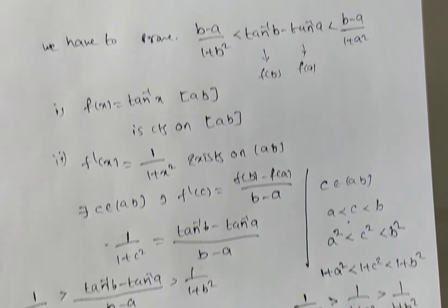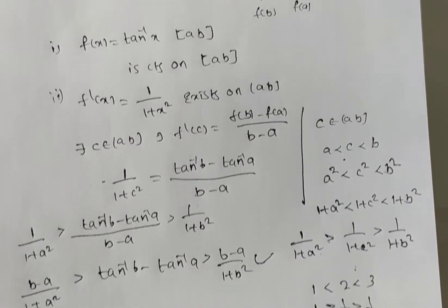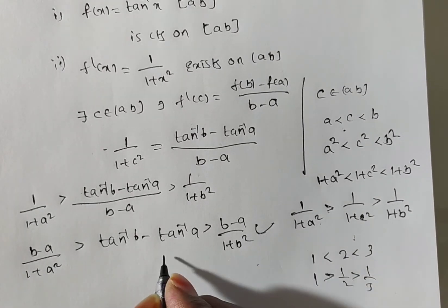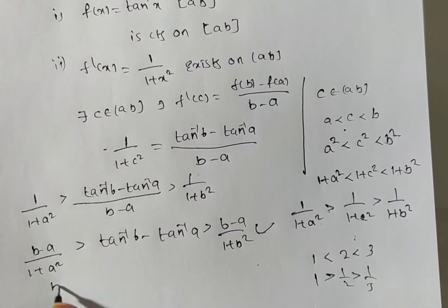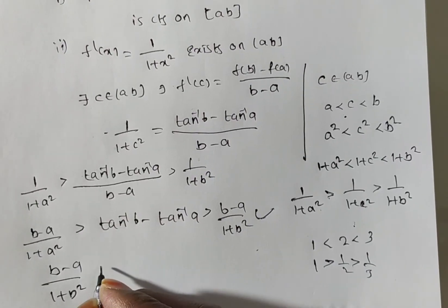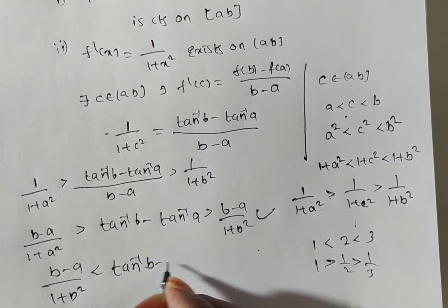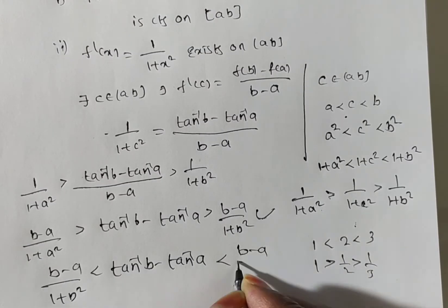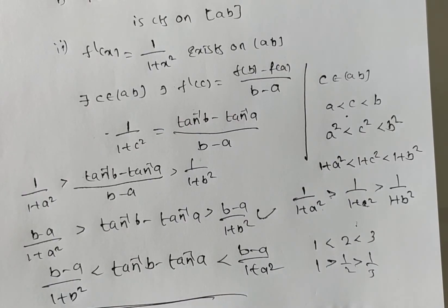But what we have to prove uses less than. So just reverse the order: (b minus a) by (1 plus b square) is less than tan inverse b minus tan inverse a, which is less than (b minus a) by (1 plus a square). Hence the inequality is proved.